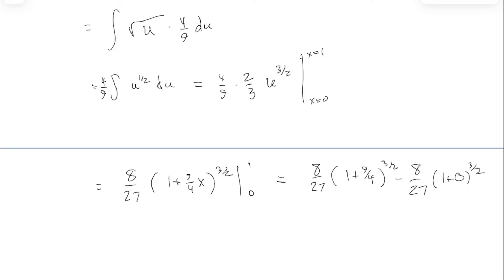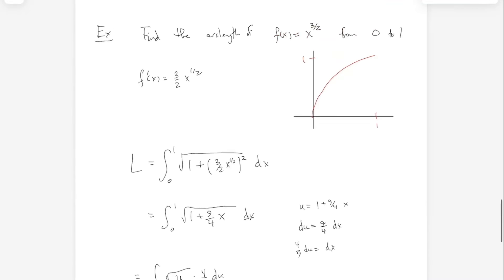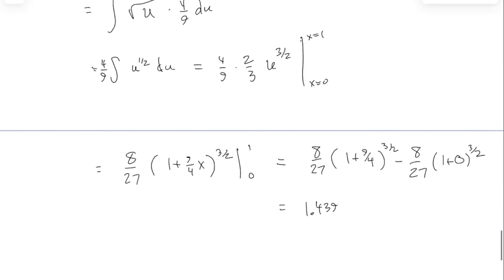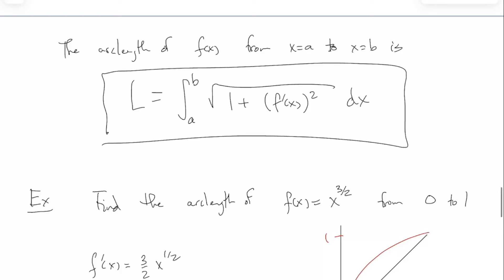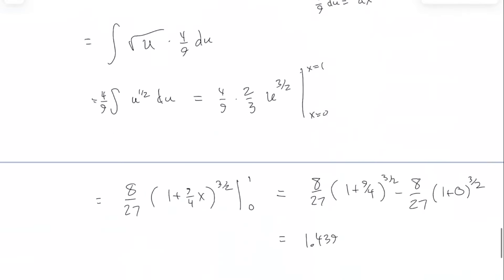Does 1.439 seem about right? This diagonal line here would be distance root two, so the curve length should be slightly more than root two — which this is. Any questions about that one? Unfortunately, that was kind of an easy one. Because of the way this formula is structured, if you start with a normal-looking function for f, after you take its derivative and square it, you often get very weird-looking things under the square root sign. So often you have to do weird tricks to finish the integral.